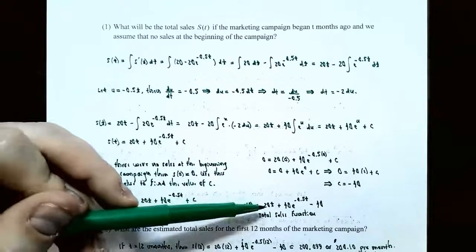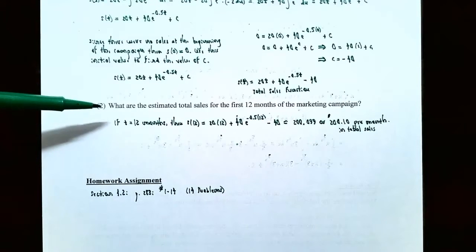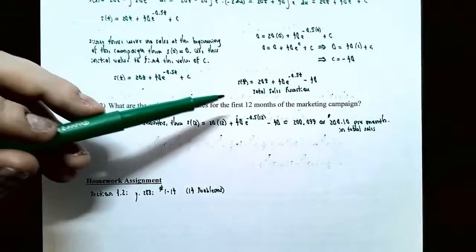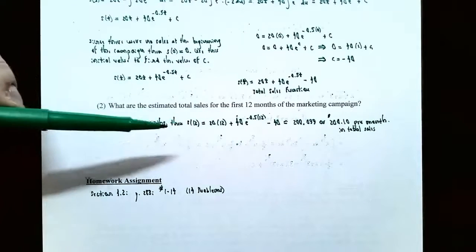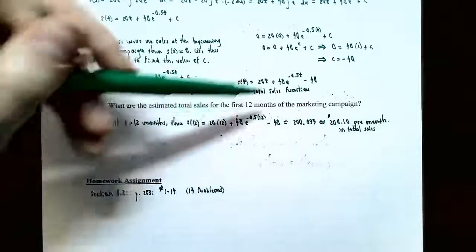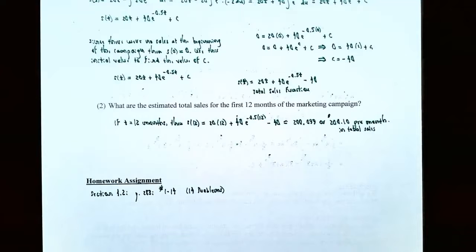The total sales function is S(T) = 20T + 40e^(−0.5T) − 40. For part 2: what are the estimated total sales for the first 12 months? Substituting T = 12: S(12) = 20(12) + 40e^(−0.5 × 12) minus 40, which calculates to approximately $200.10 in total sales per month for this marketing campaign.